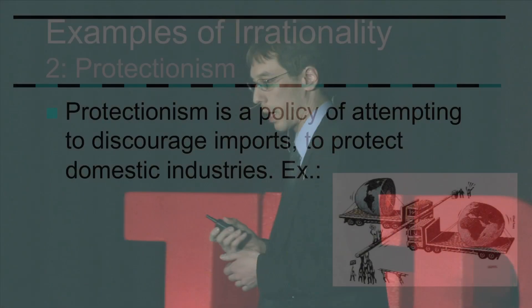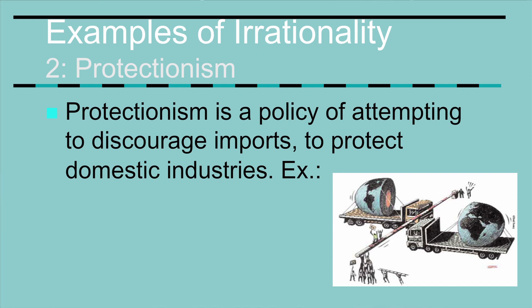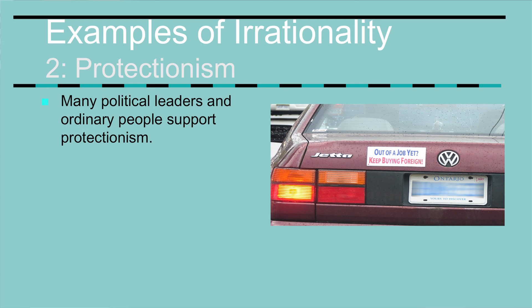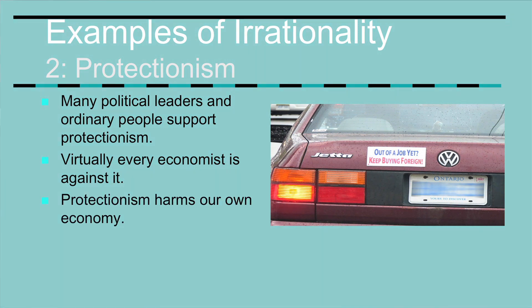My second example is protectionism — a policy whereby the government attempts to discourage foreign imports in order to protect domestic industries. There are two ways they do this: first, quotas, which are legal limits on how much of a foreign good you're allowed to import; and second, tariffs, where the government places special taxes on imported goods to drive up their price and help domestic manufacturers. Many people support this, both among the general public and political leaders.